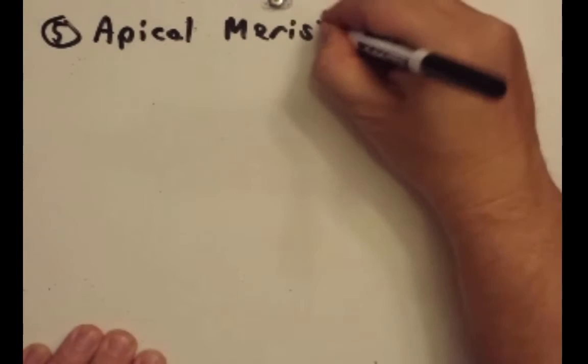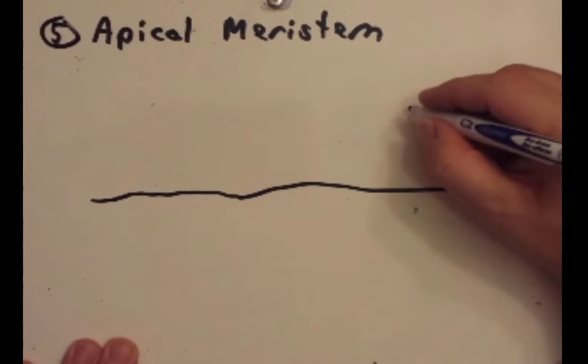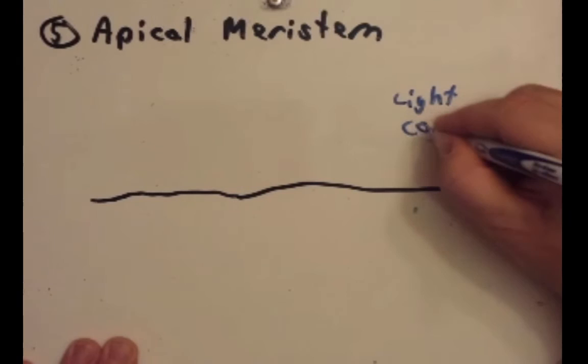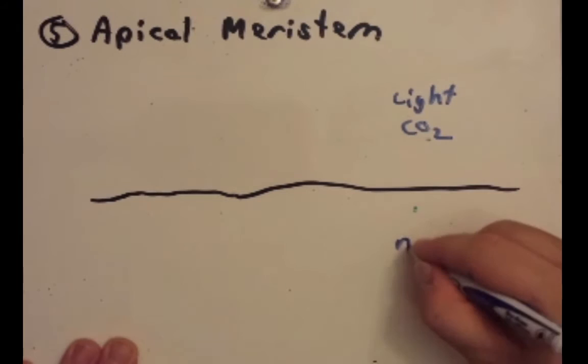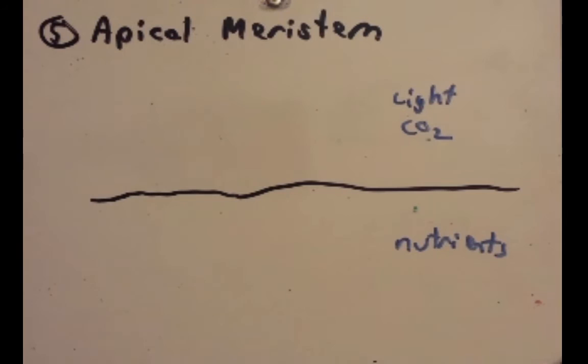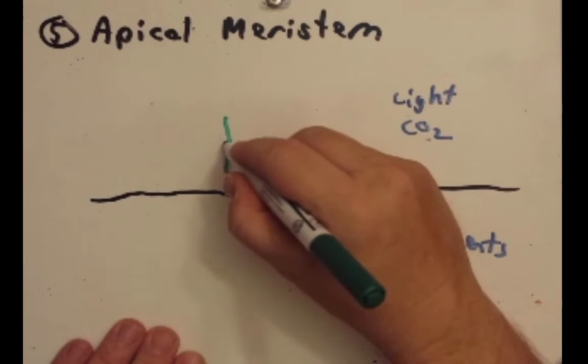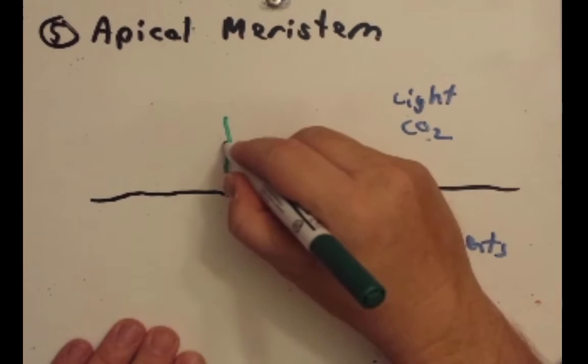One of the key problems the plants faced was that the light and CO2 it needed for photosynthesis was above ground. But the nutrients were below ground. This line indicates the ground. So the plant would grow upwards where the light and CO2 was.